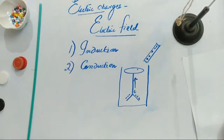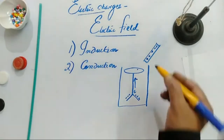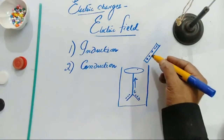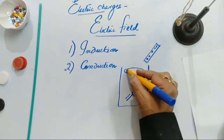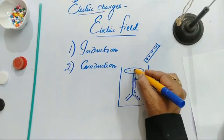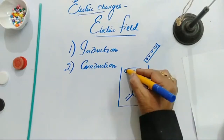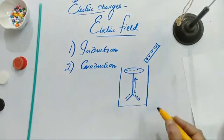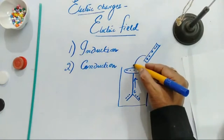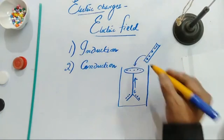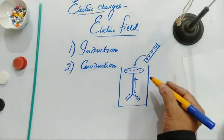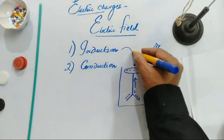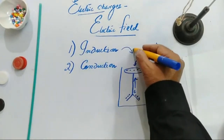That's the reason why they get divergence. So what does it indicate? If you keep the positive charge here, this will become negative charge — that means you are inducing the opposite charge. This is one way, and this is called charging by induction.